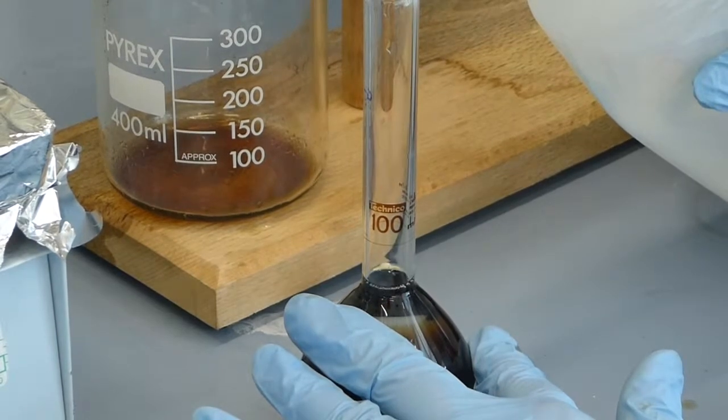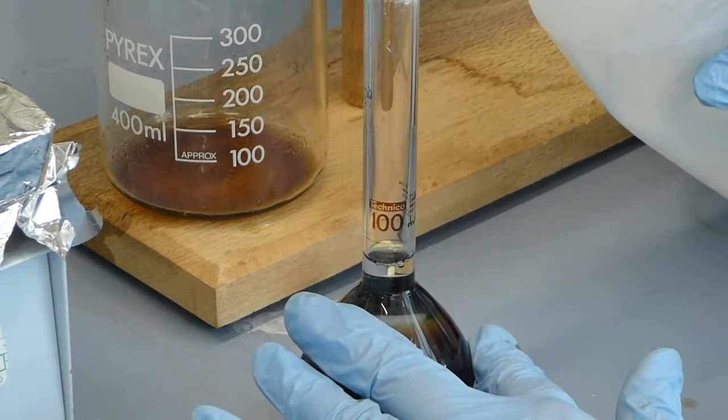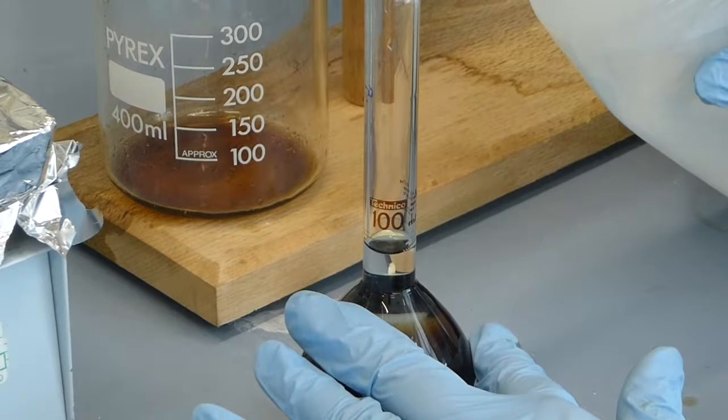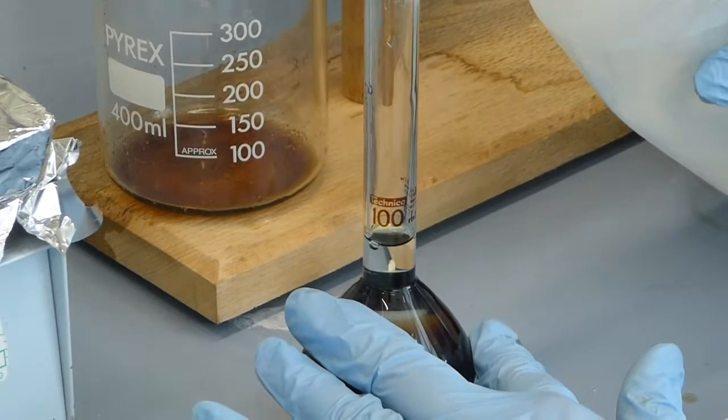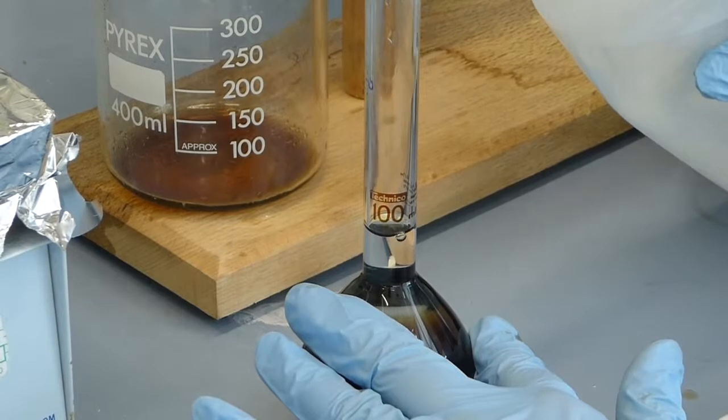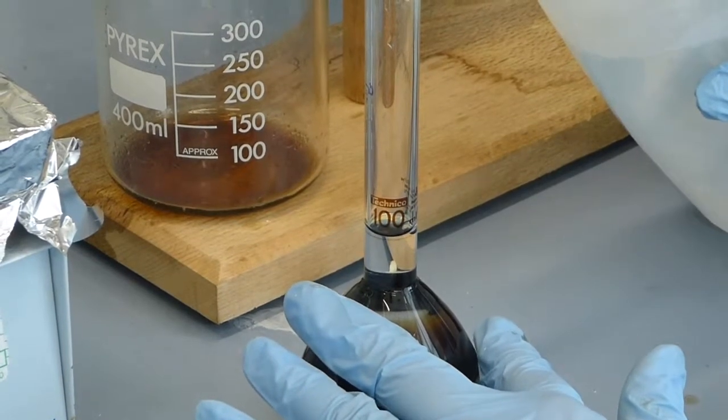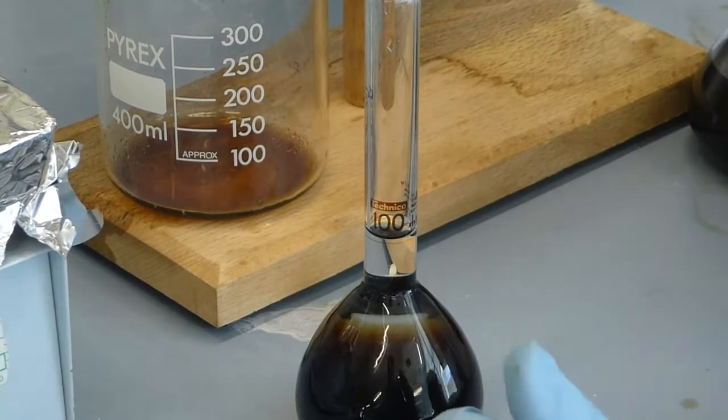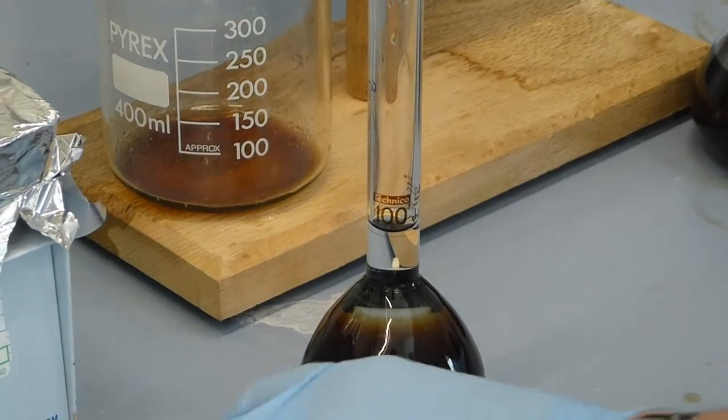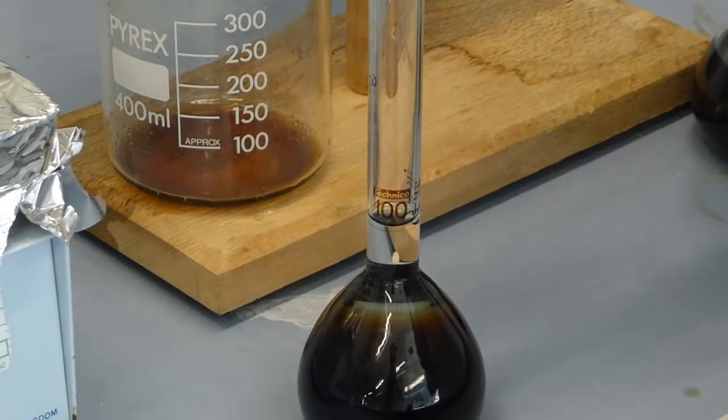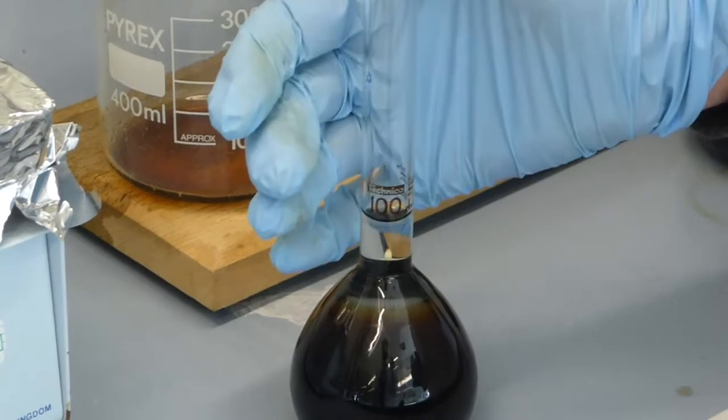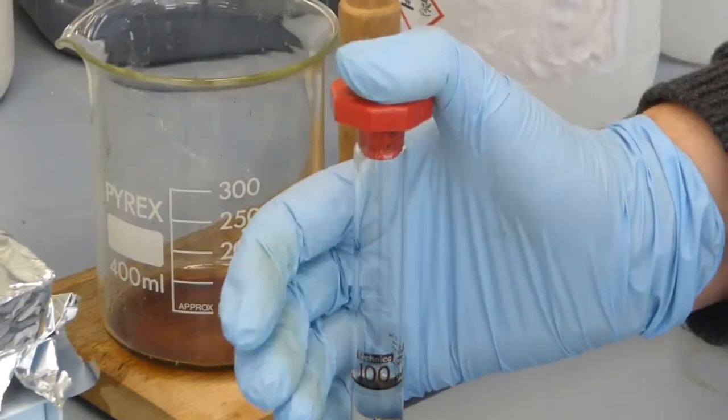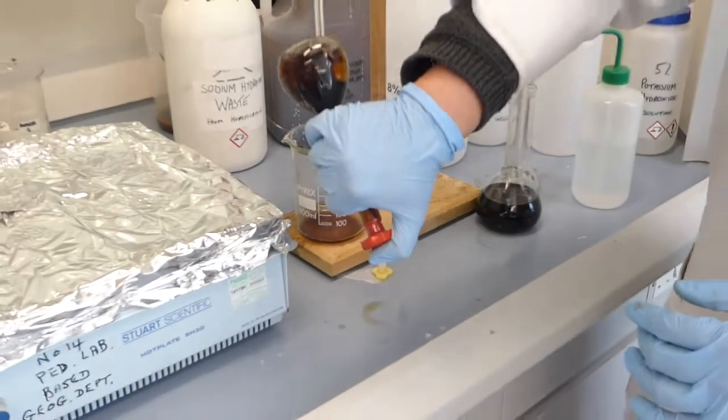And then you want to top up with distilled water up to the 100 ml line. Again, you need to be accurate with this. Stopper the volumetric flask and invert several times because again you want this solution to be mixed.